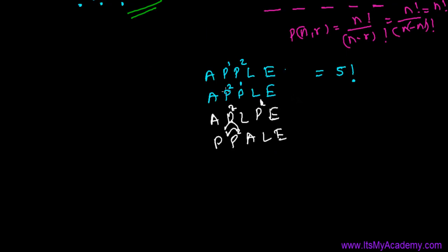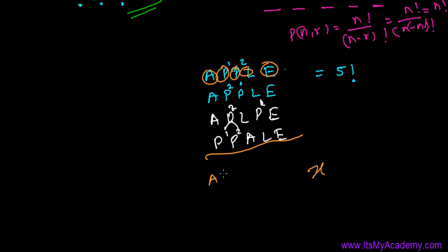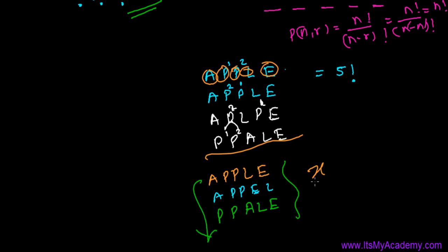Suppose there are X number of truly distinct arrangements of A, P, P, L, E — every time giving a different word, like APPLE, then APPEL, and so on. Let's say we have X such words. Now notice: in every word, wherever the two P's appear, if P1 and P2 were distinct, we could arrange those two P's in the two positions they occupy in two factorial ways.